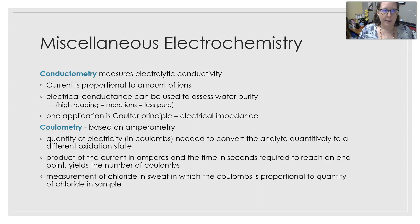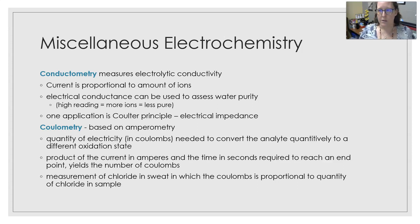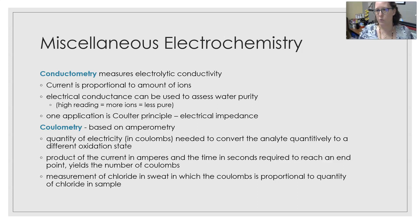Another application of conductometry is the Coulter principle with electrical impedance, which is used to count cells. Every time a cell passes through and breaks an electric field, it counts as one. This allows counting of red cells and white cells.